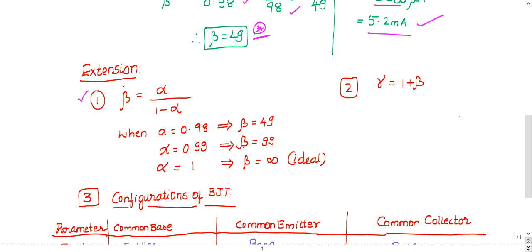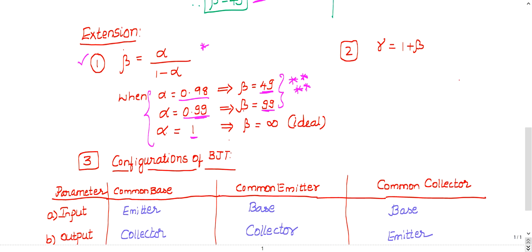Beta equals alpha divided by (1 minus alpha). For example, if alpha is 0.49, you'd compute 0.49 / 0.51, which takes time. Instead, remember directly: if alpha is 0.98, beta is half of 98, which is 49. If alpha is 0.99, beta is 99. If alpha is 1, beta is infinity. In the exam they mostly use these two values — 0.98 and 0.99 — so just memorize these.